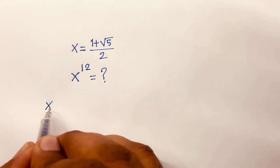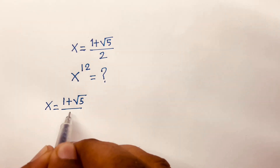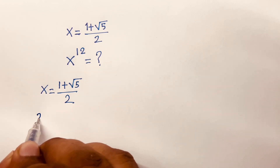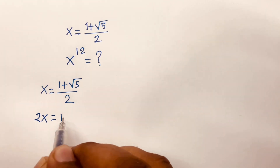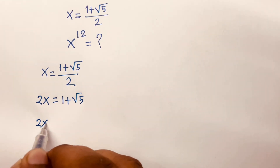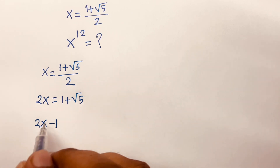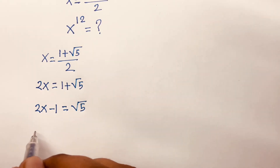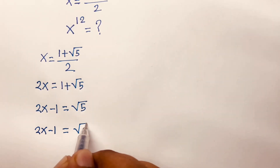Our equation is x is equal to 1 plus square root 5 over 2. Then I can say 2 times x, so 2x is equal to 1 plus square root 5. Then moving the 1 to the left side, 2x minus 1 is equal to square root 5.